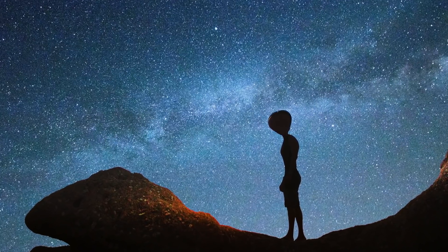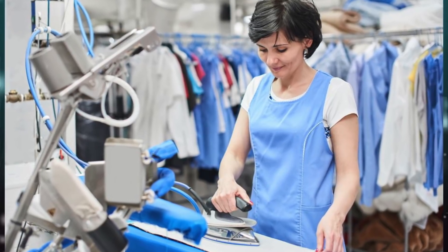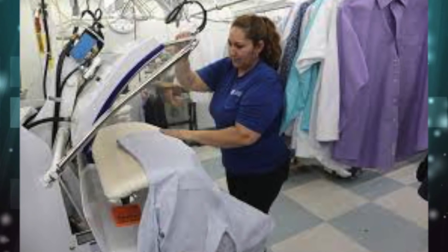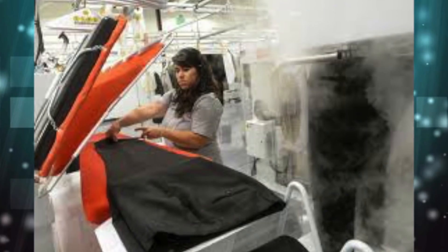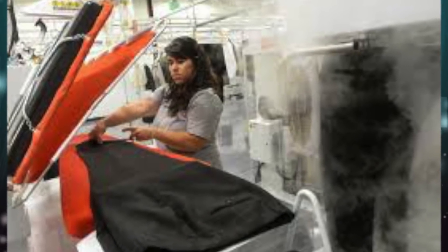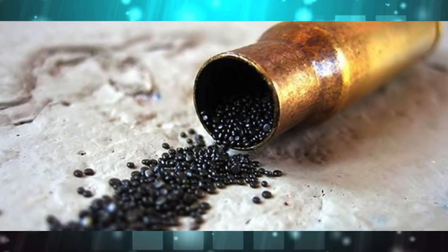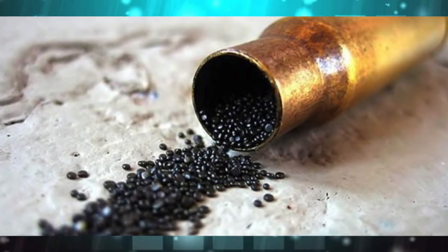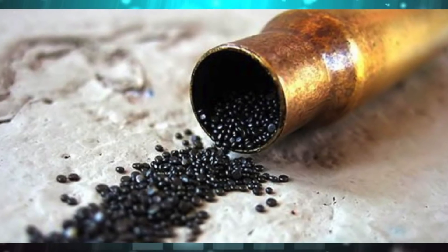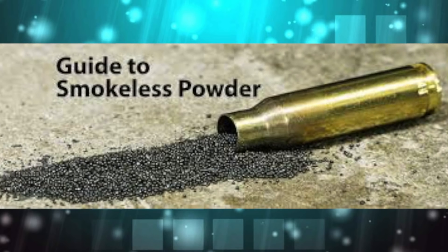What do you mean by a light year? A light year is a unit of measuring the distance between stars. Light travels 2,99,792.5 km per second. When multiplied by 60, we get the distance traveled in a minute.